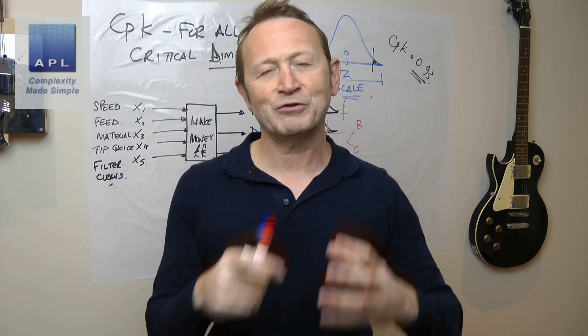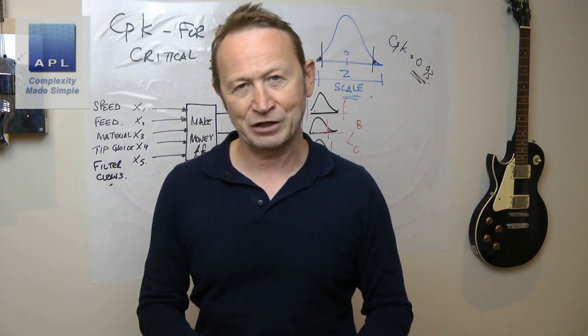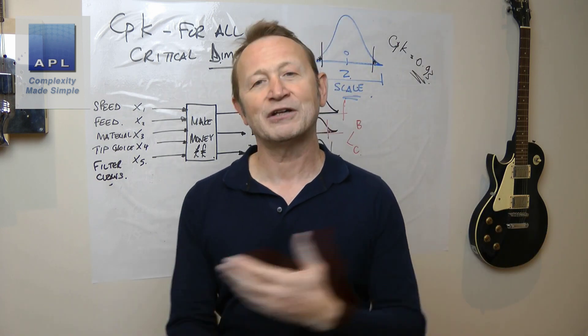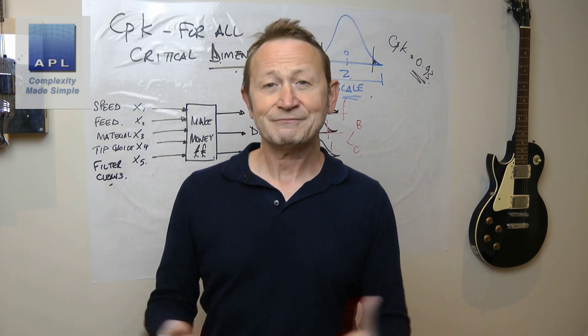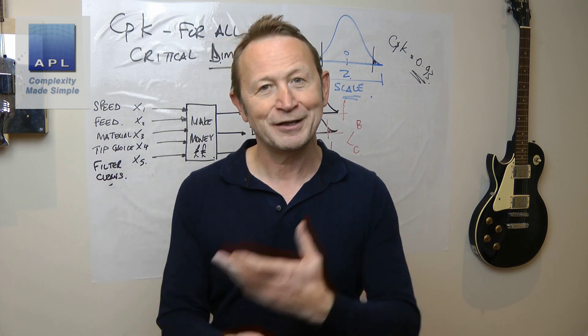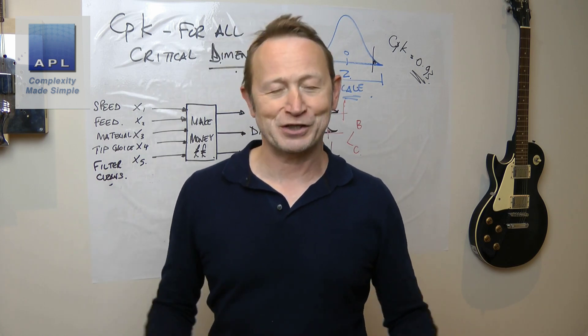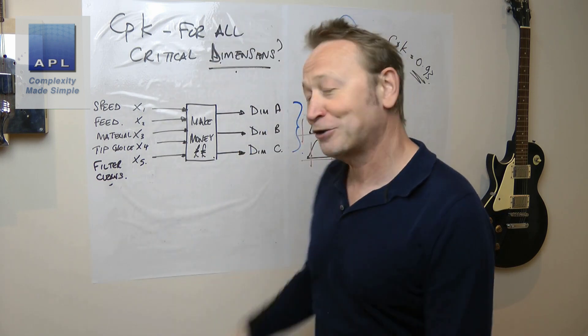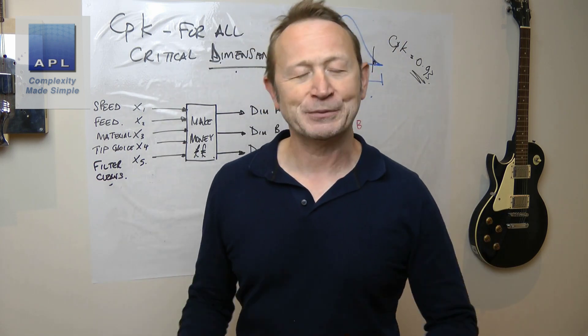You could do something fancy with the Z scale if you wanted to put them all together, but the first thing you do when you have a CPK that's not very good is take them all apart and look at them individually. That's what people do.